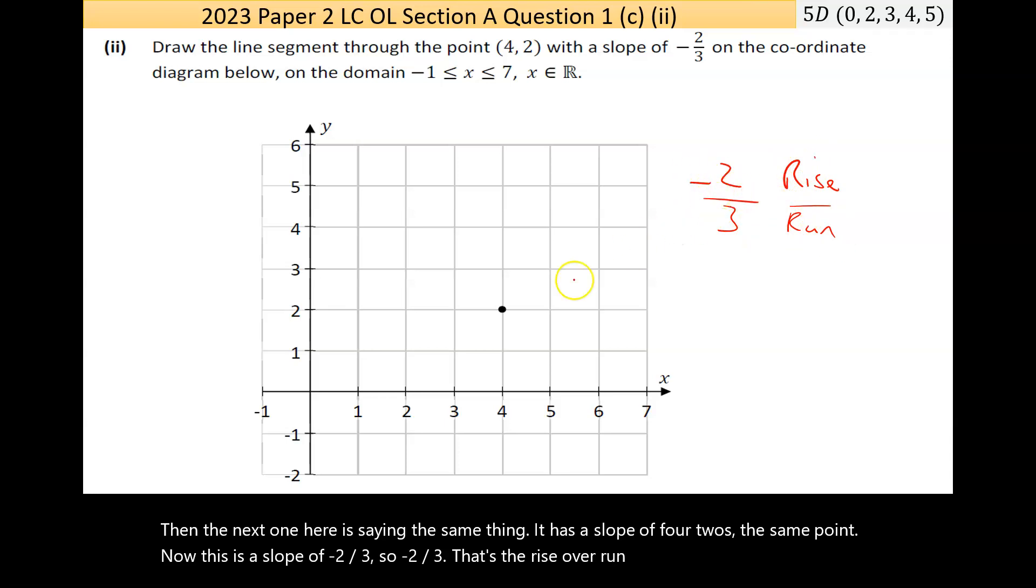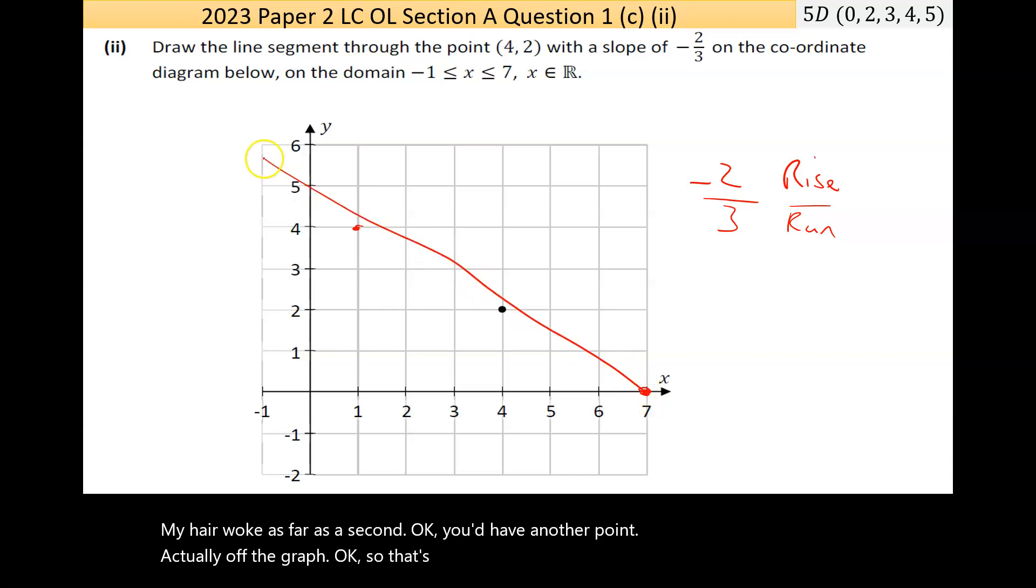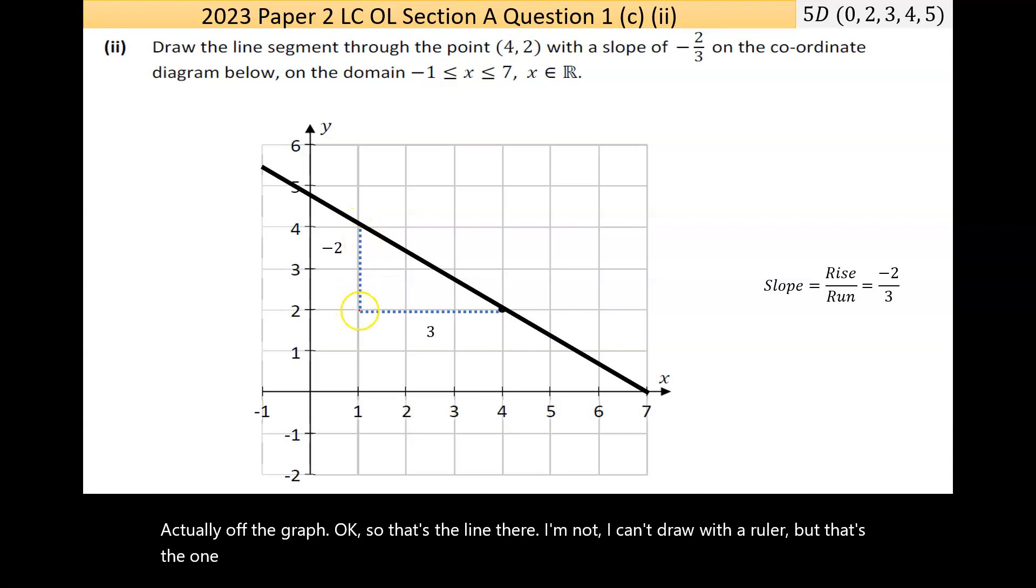You could argue it's going across three up two. That's the line there - I can't draw with a ruler, but it's going down two for every three it's going across, or going across three up two if you're looking at it from that other perspective.